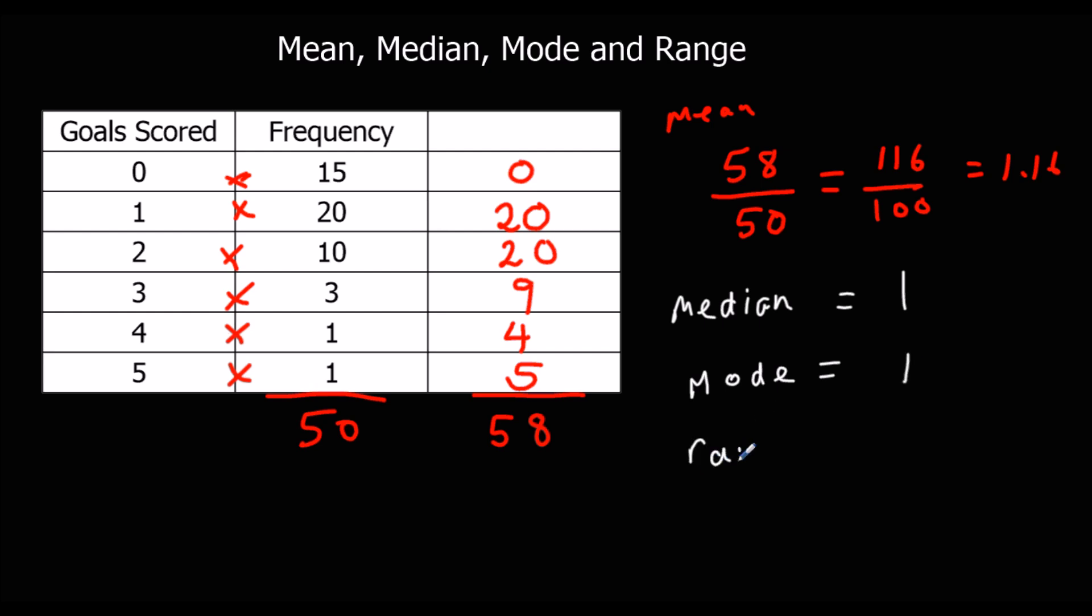And the range. So the biggest number we've got is 5. The smallest is 0. 5 take away nothing, it's still 5.